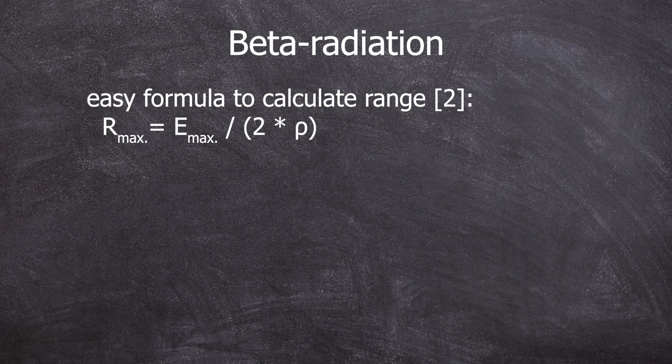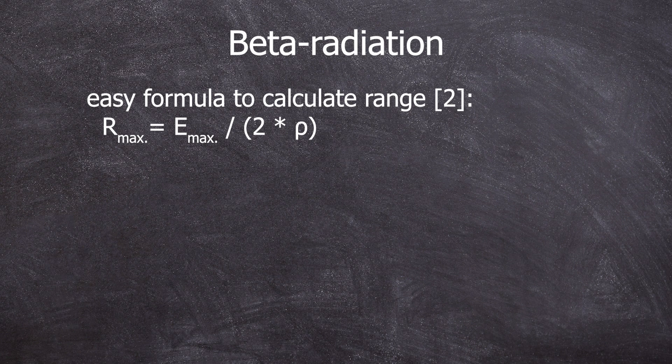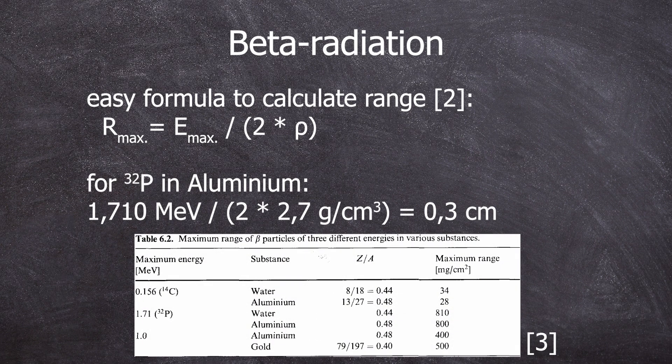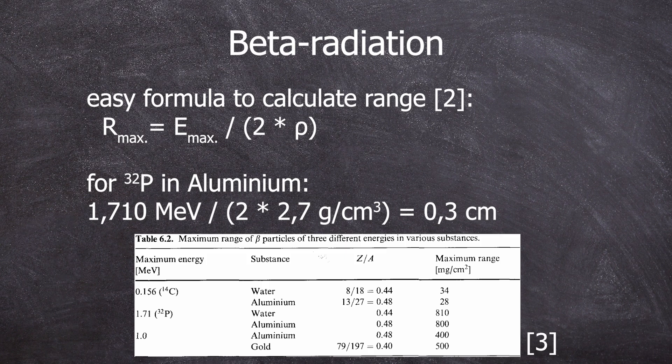The range of beta radiation can be calculated using this equation. Our max is Emax divided by two times rho. Rho referring to the density of the material.